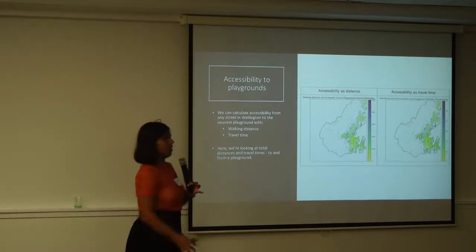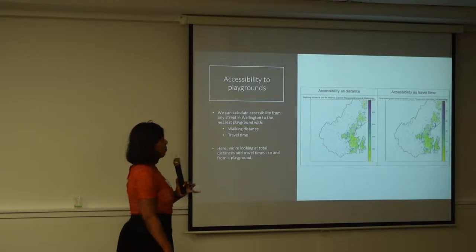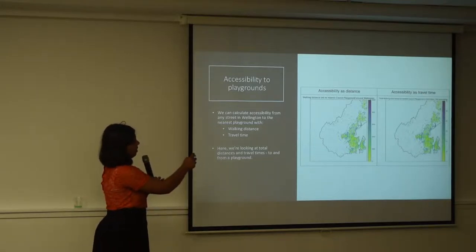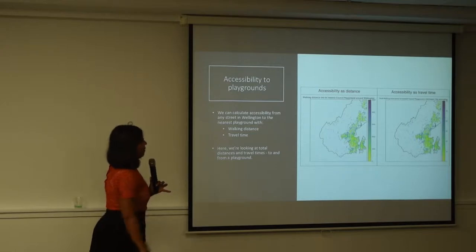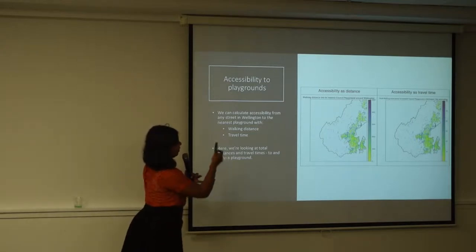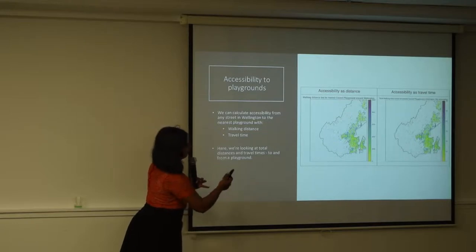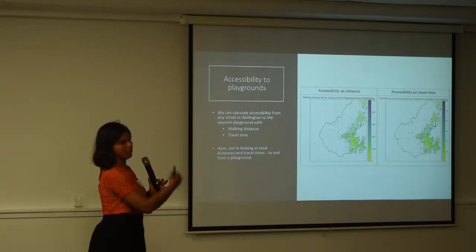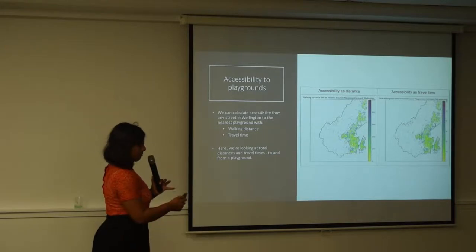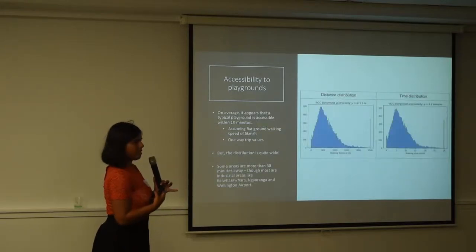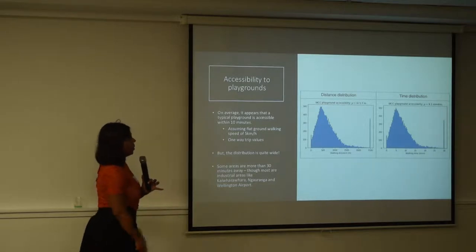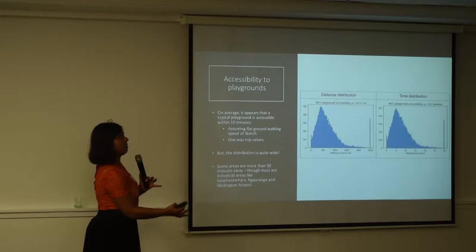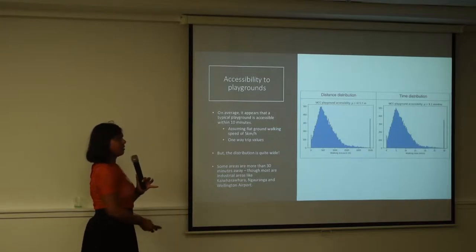These are some of the heat maps that you get out of Pandana. It's an accessibility tool. The lovely yellow spots are playgrounds, and the accessibility near them is obviously very close. As you get towards green, you're starting to get a bit further away, and towards blue you're really far — like five kilometers away. The graph on the left is in distance, and the graph on the right is in travel times. You can extract that data as histograms or any density plot. Basically, the typical council playground in Wellington is about 700 meters away and takes approximately eight minutes to get there.